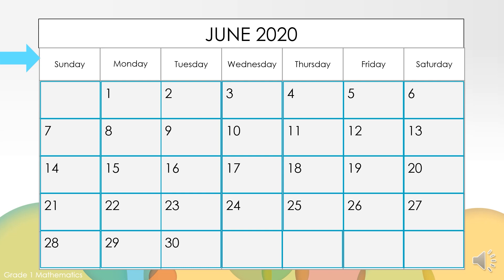On what day of the week will July 1st fall? July 1st will come after June 30th. It is going to be a Wednesday. July 1st will be a Wednesday.